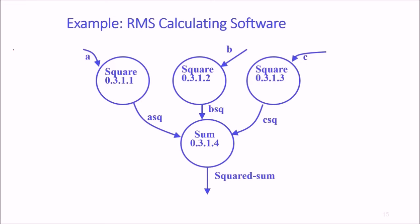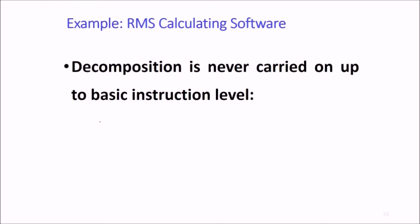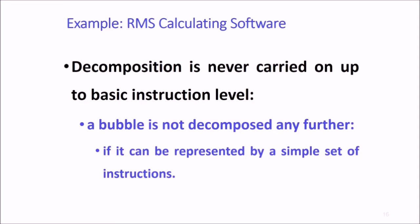Going further down, we have square for a, square for b, square for c. We compute square of a, square of b, square of c, pass it to sum them up, then pass the squared sum to the next function. This decomposition is never carried out to a basic instruction level. A bubble is not decomposed any further when it can be represented by a simple set of instructions.